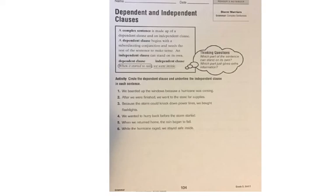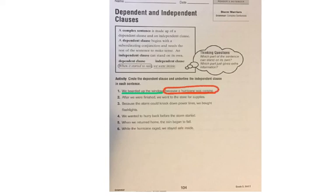Our activity says: circle the dependent clause and underline the independent clause in each sentence. You're going to look for which piece can be a complete sentence on its own, and which piece is not and contains a subordinating conjunction. Number one: 'We boarded up the windows because a hurricane was coming.' 'We boarded up the windows' is the independent clause — it can be a complete sentence on its own. 'Because a hurricane was coming' is the dependent clause. Without the rest of the sentence, it's not complete, so you circle that part.